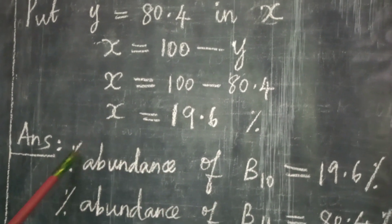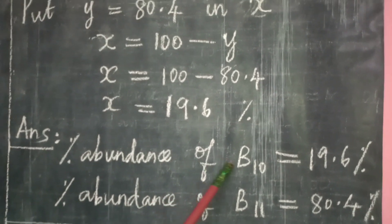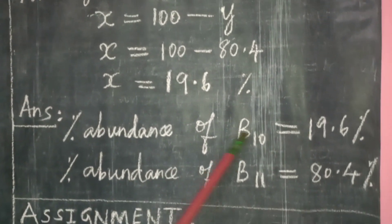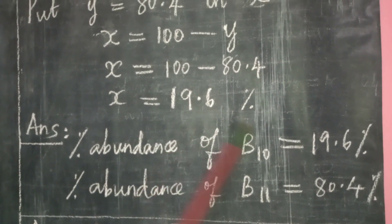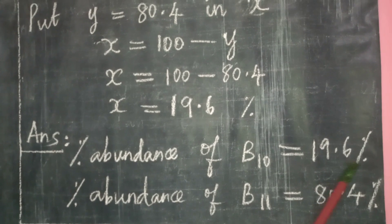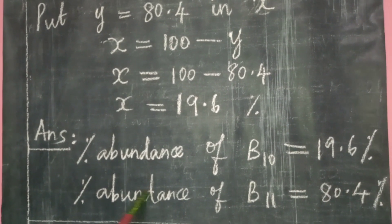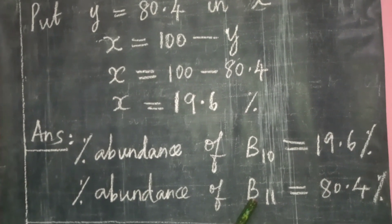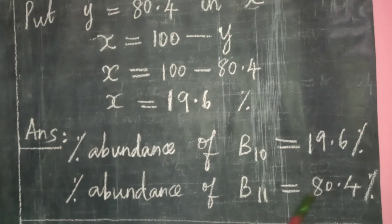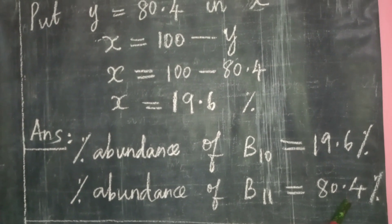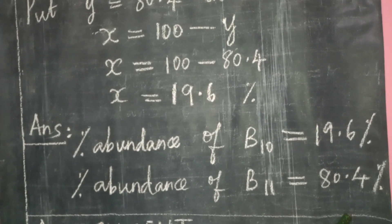So the percentage abundance of boron-10 (B-10) is 19.6%, and the percentage abundance of boron-11 (B-11) is 80.4%.